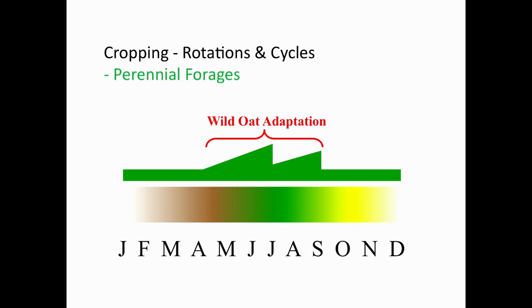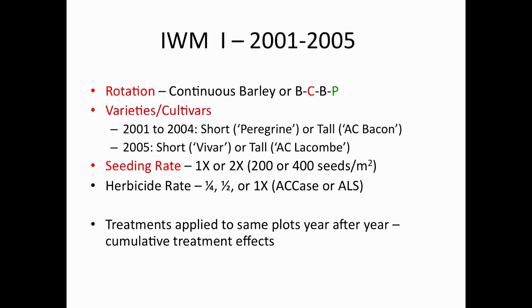I'll show some integrated weed management data now. But first, the perennial forage data—this is one of the best ways to get at wild oats and many other weeds. When you cut these crops during the growing season, the weeds have little chance to produce viable seed, so any seeds that may have been resistant really don't go into the seed bank. That's one of our better methods.